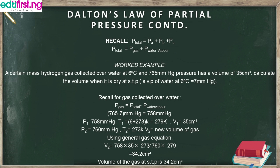A certain mass of hydrogen gas collected over water at 6 degrees Celsius and 765 mmHg pressure has a volume of 35 cm³. Calculate the volume when it is dry at STP. Note that the standard vapor pressure (SVP) of water at 6 degrees Celsius equals 7 mmHg.